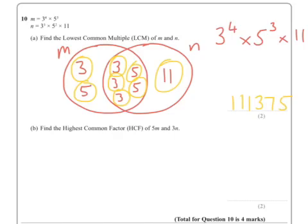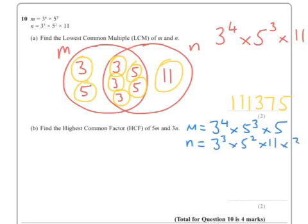Now the next one, this is a bit sneaky really. It says find the highest common factor of 5M and 3N. Now at the moment, we've got M equals 3 to the power 4 times 5 cubed, but there's 5 of them, it wants us to multiply that by 5. So N is 3 to the power 3 times 5 squared times 11, but it's times 3.